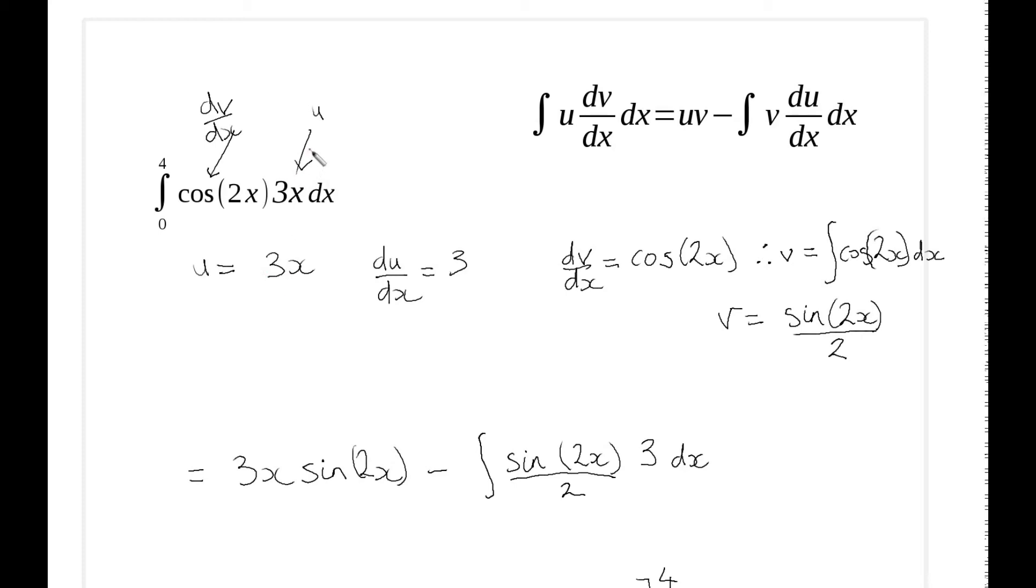Let's have a look at the detail for the learning experience. u is just 3x, so that's going to be in my formula as this term here. Then I've got the derivative of that, which is simply 3. So that's going to be the one that goes in there. dv/dx is the one I designated here, which we don't actually use, but we use that to find v.